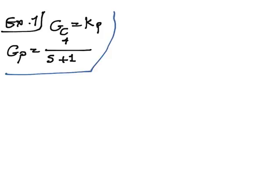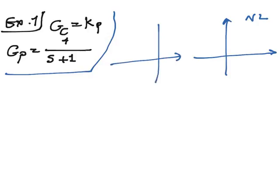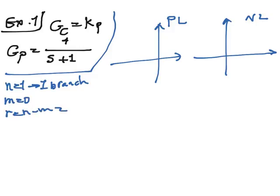We will have two graphs: one for the negative locus and another one for the positive locus. First of all, we have only one pole, so n is equal to 1. Accordingly, we will have only one branch for the positive locus and one branch for the negative locus. Because m is equal to 0, we don't have any zeros. r, which equals n minus m, is equal to 1, so we have one asymptote.